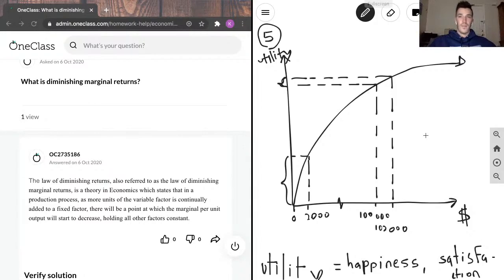In this case, diminishing marginal returns of utility to money, to dollars. But it basically goes to show, as you have more of a thing, each additional unit of that thing will bring you less satisfaction.